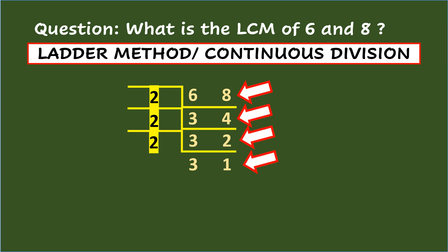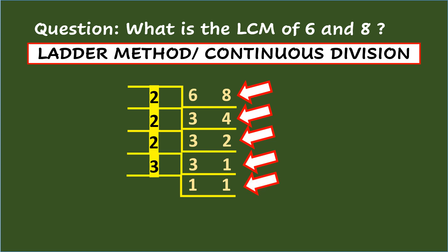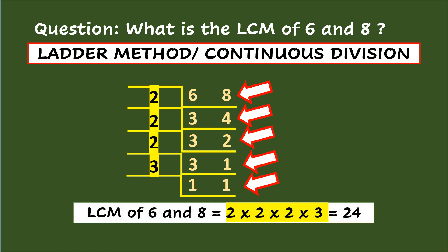Take note that the numbers in the row are not yet all 1's, so you will have to continue dividing. Using the numbers in the fourth row, the only smallest prime number that can divide 3 exactly is 3. So, 3 divided by 3 is 1. For the other number, which is already 1, you will just bring down the number. Since the last ladder row is all 1's, you will end here. Finally, multiplying all the prime numbers used: 2 times 2 times 2 times 3 equals 24. And that is the LCM of 6 and 8.